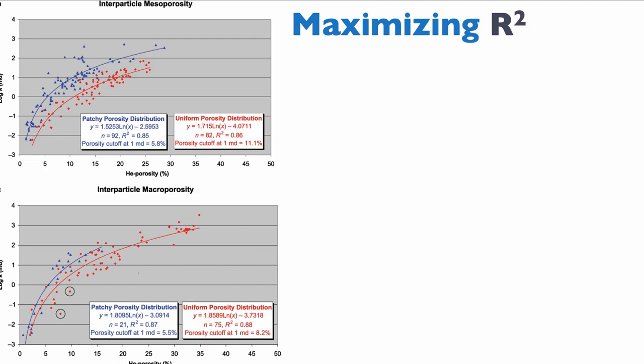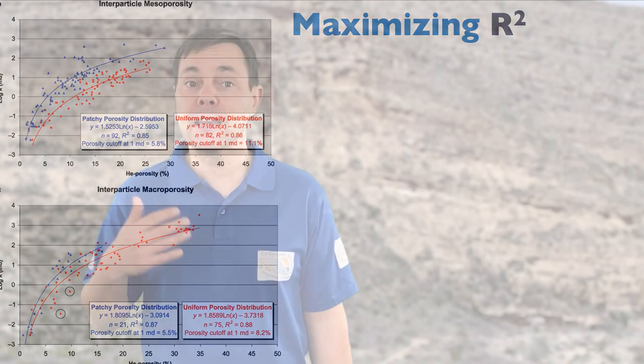You can do this also for interparticle macroporosity. Same thing — we see that distinguishing between patchy and uniform distribution makes a big difference in the square R. This is the value of these classes, and this is what companies and researchers do when they do rock typing.